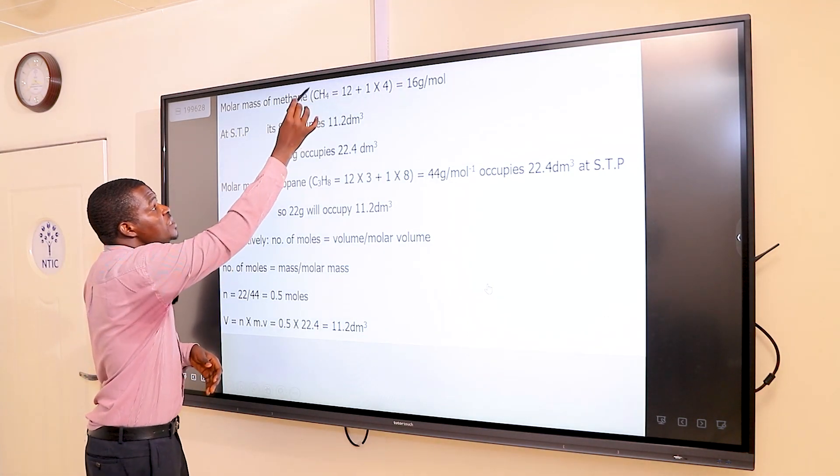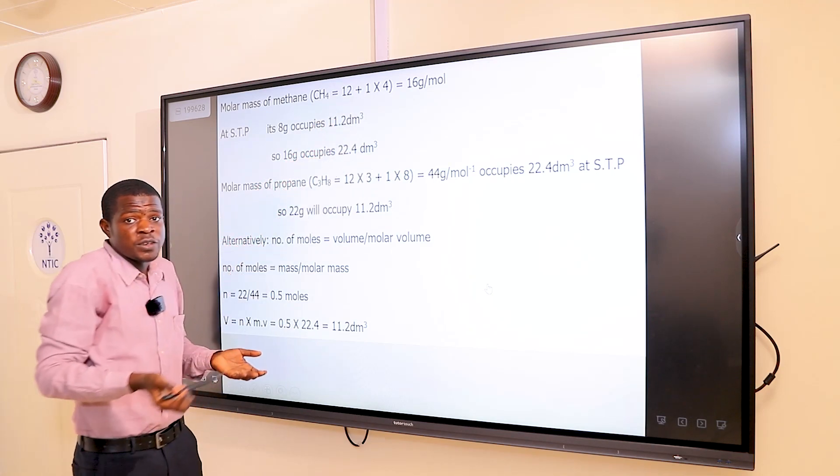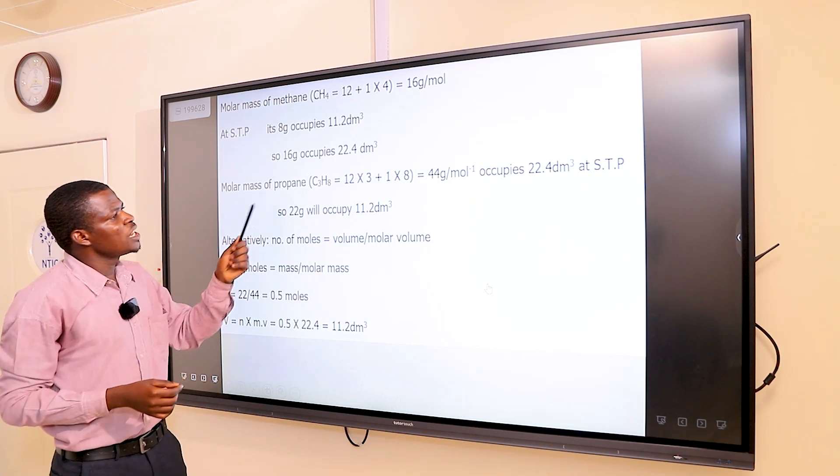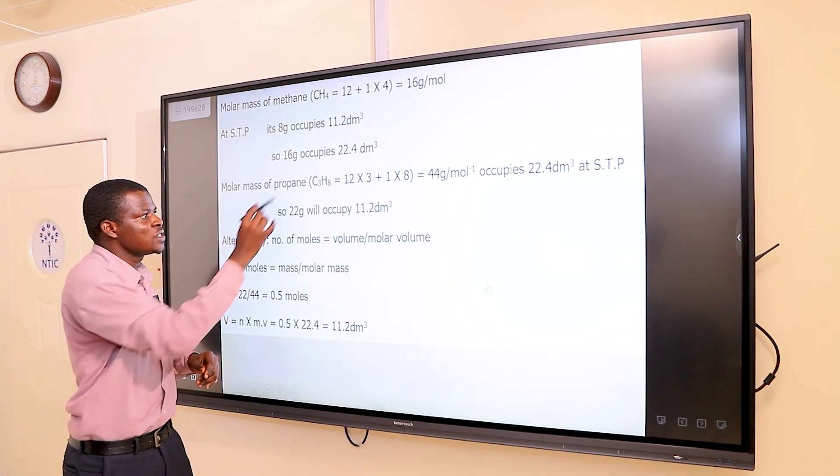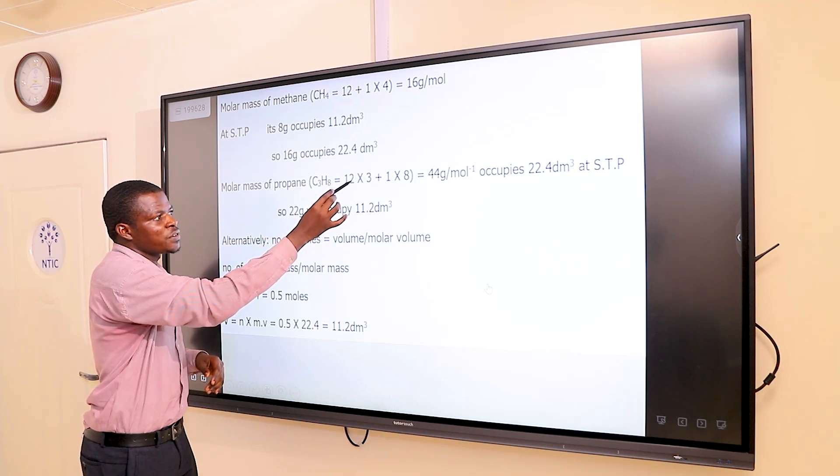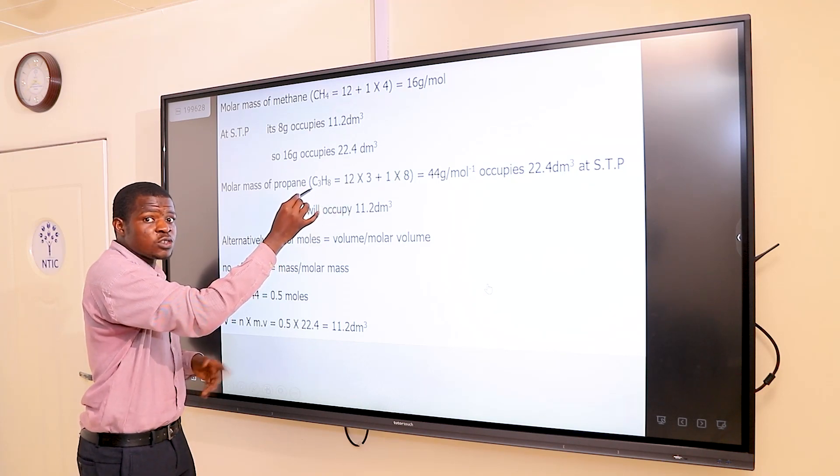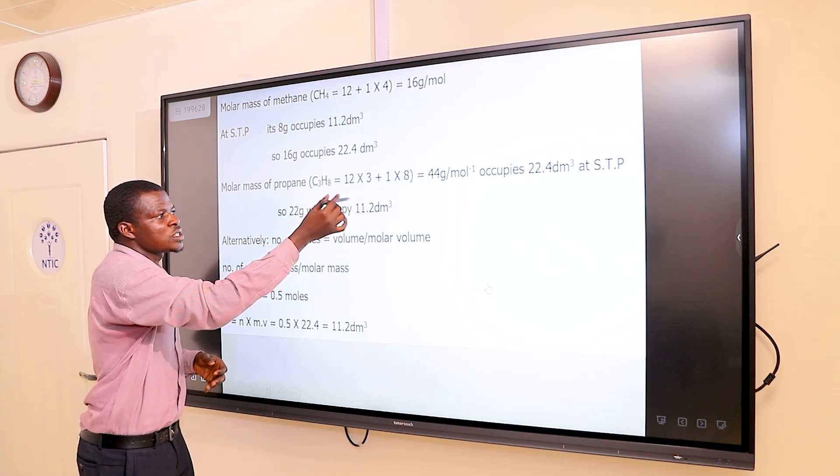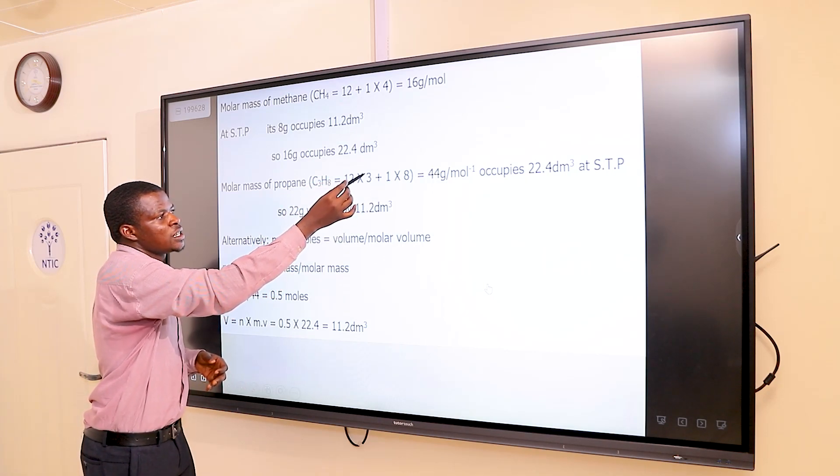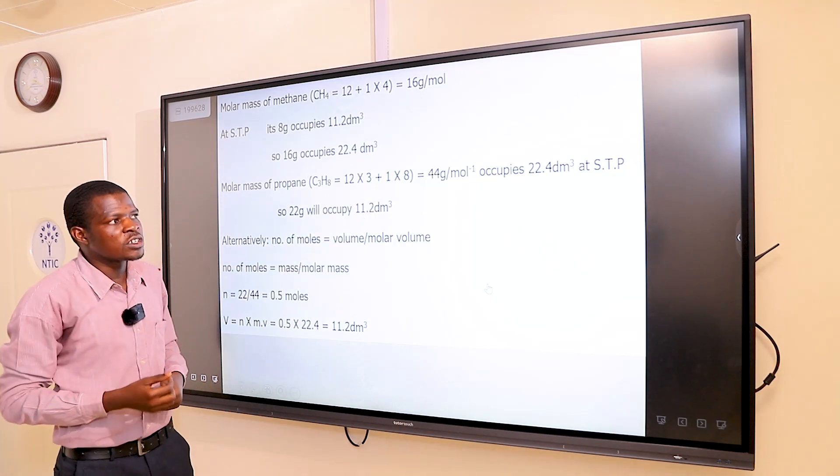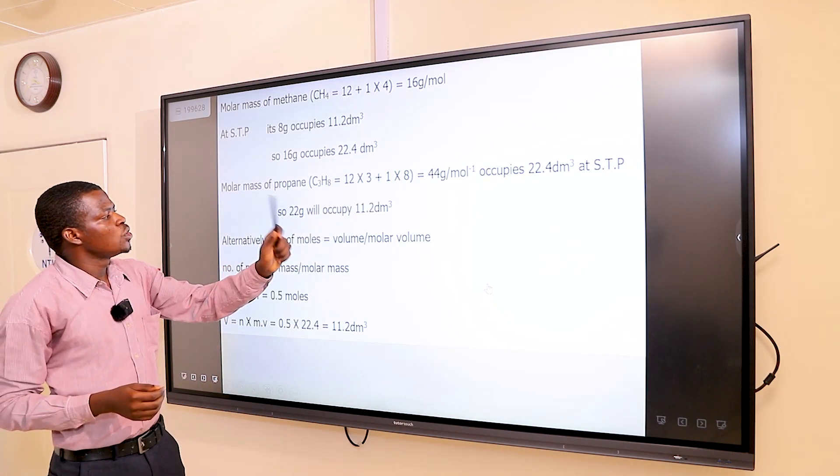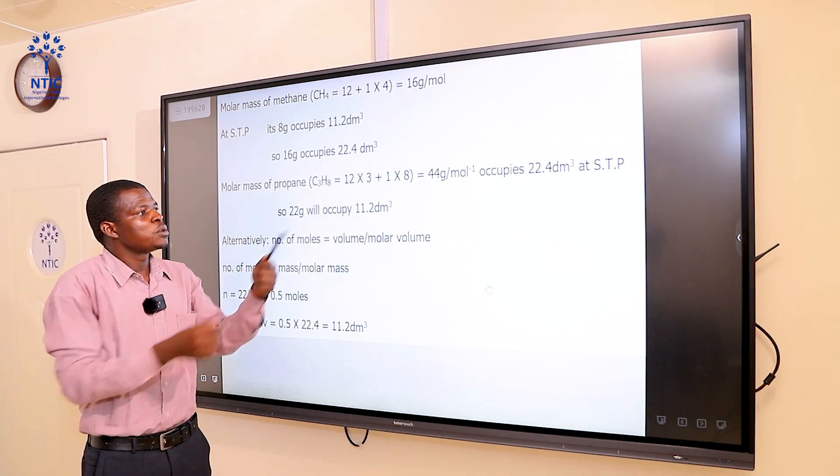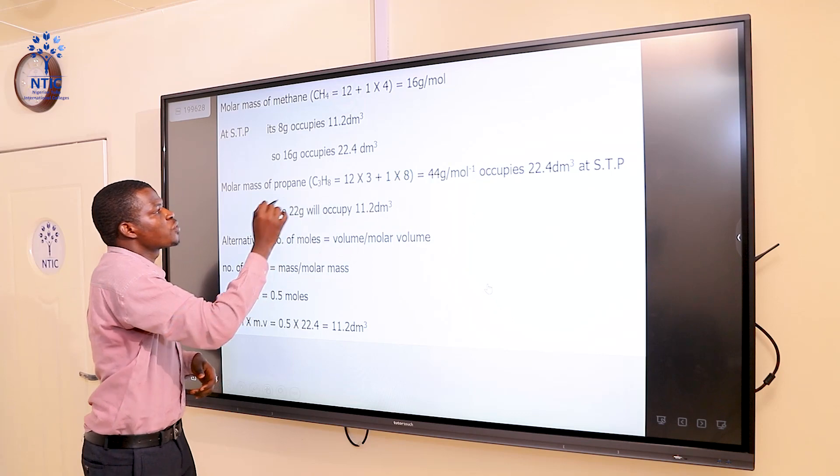One mole of any gas contains a molar volume of 22.4 dm³. One mole of methane, which has 16 grams, had 22.4 dm³. Let's get back to the main part of the question. The molar mass of propane, C3H8, is carbon 12 times 3 plus hydrogen 1 times 8. That gives me 44 grams per mole. So 44 grams per mole will occupy 22.4 dm³.